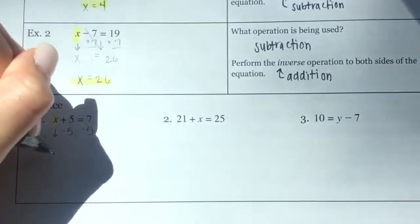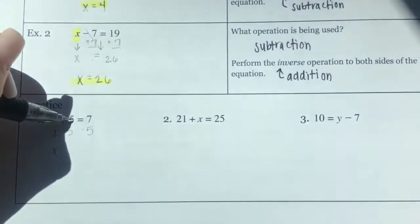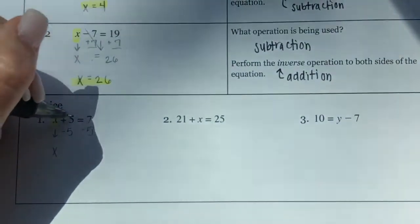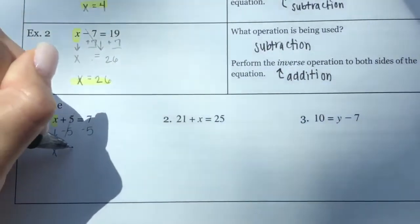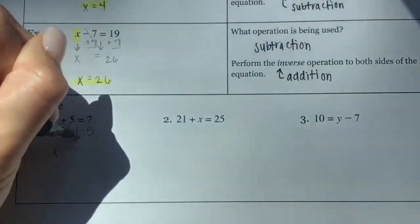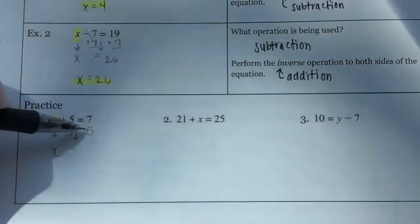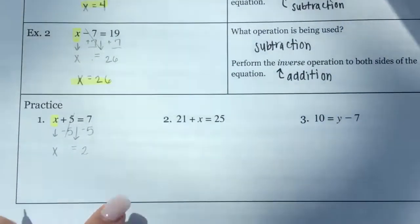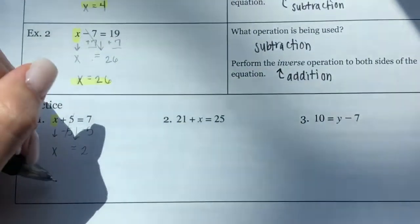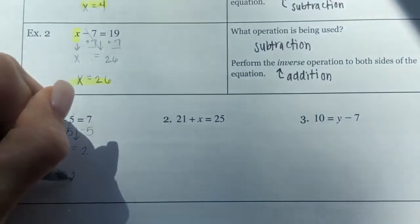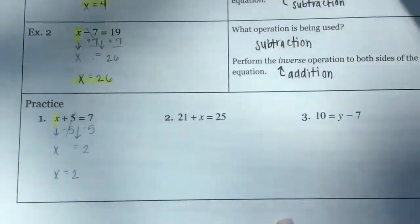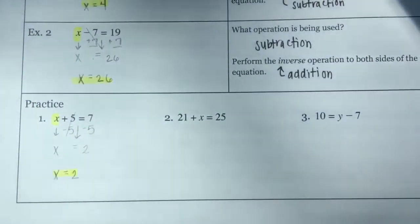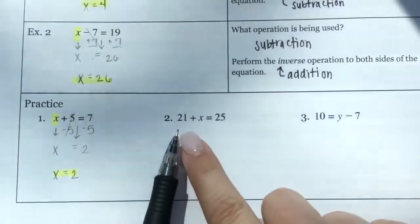Bringing down X: 5 minus 5 cancels out because they're inverse operations. Bring down the equal sign, and 7 minus 5 is 2. Now X is by itself and the right side is simplified, so the solution is X = 2.